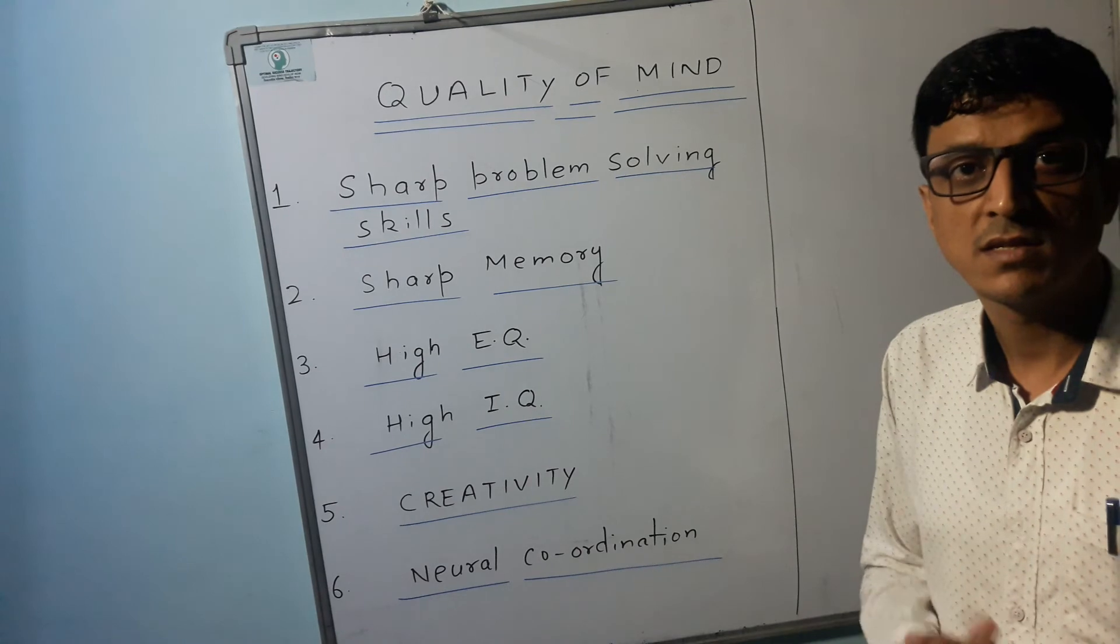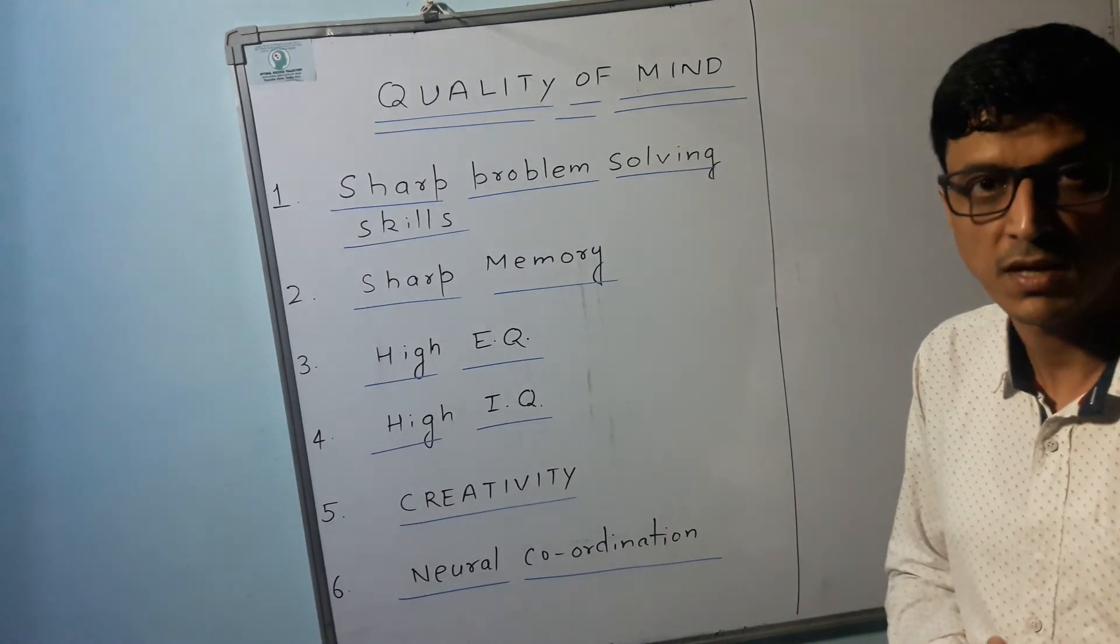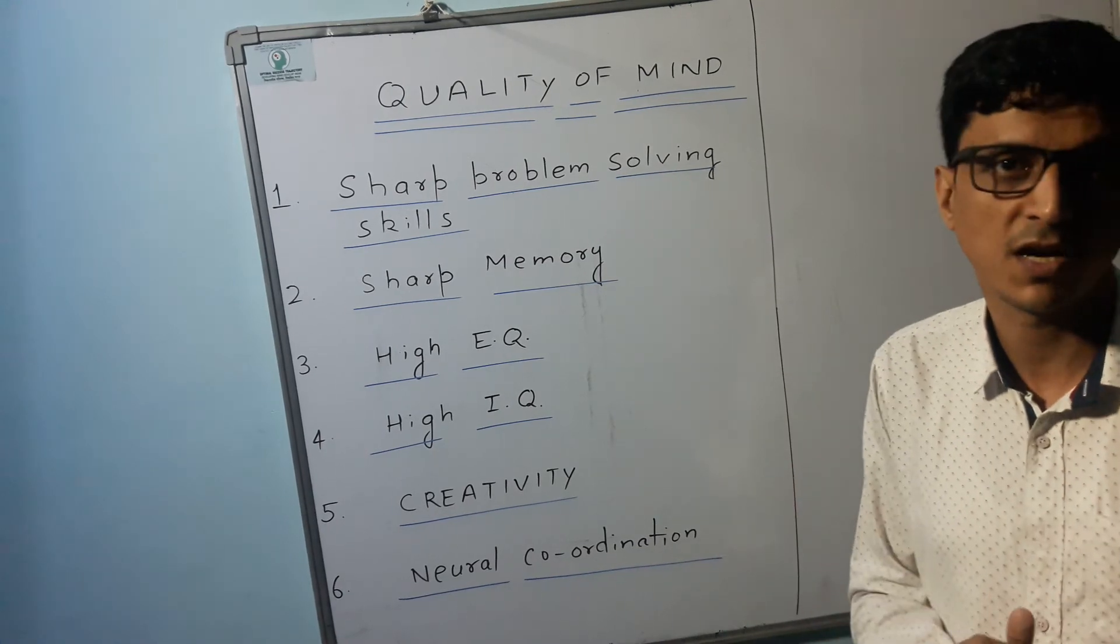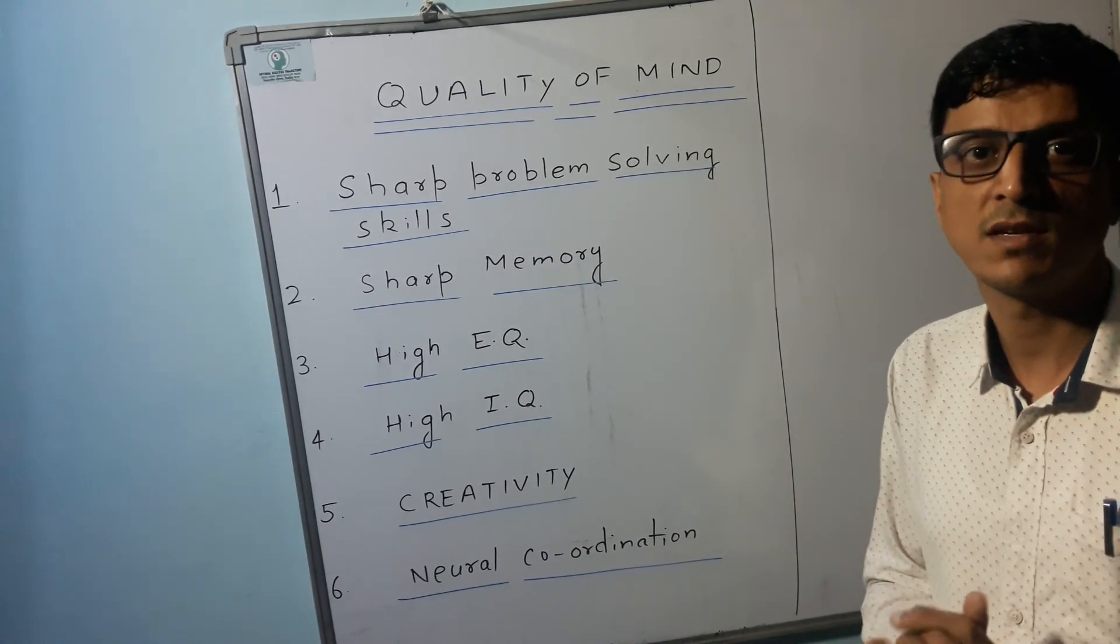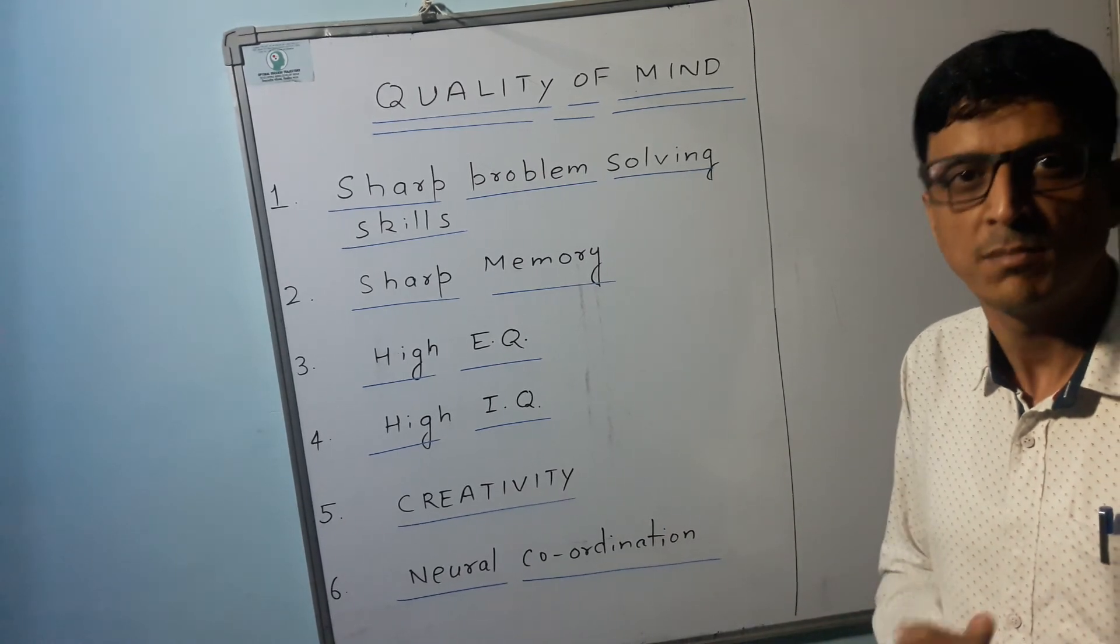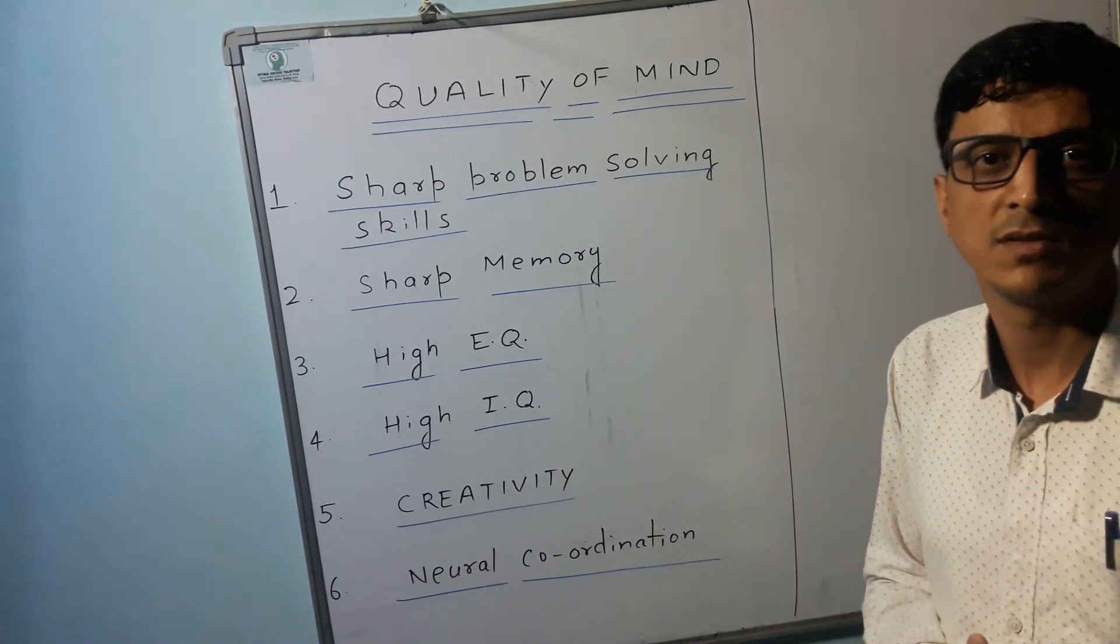And last but not the least is neural coordination. Because problem solving skill is just about how your neurons, how your neural network works in a certain specific condition. So better the neural coordination, better you will be able to solve your problem.